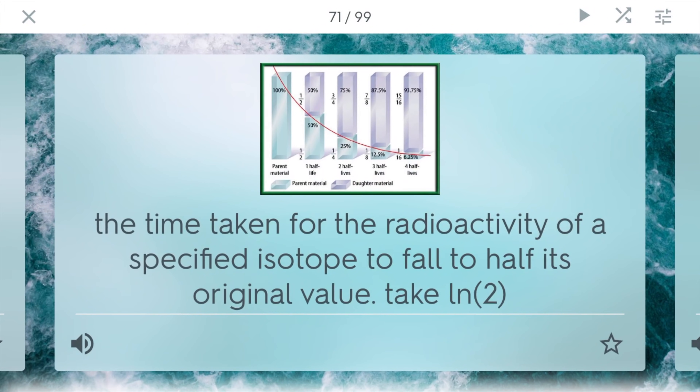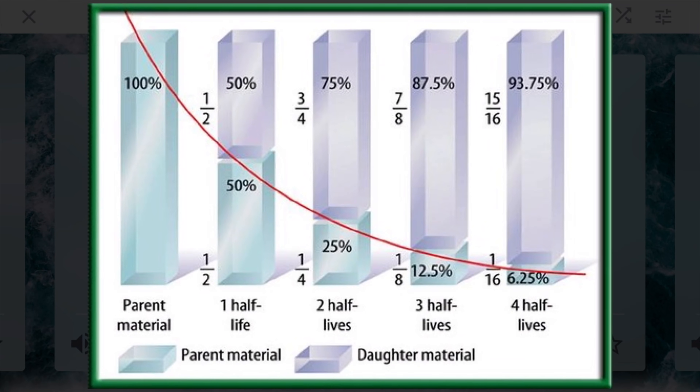Half-life specifies the time taken for the radioactivity of a specified isotope to fall to half its original value. You can take ln(2) because that's part of the half-life formula to get a half-life value. People often use half-life to compare the daughter material to the original material, whether that be carbon or uranium-235, because eventually over time things start to decay.